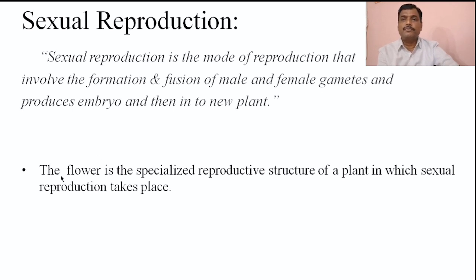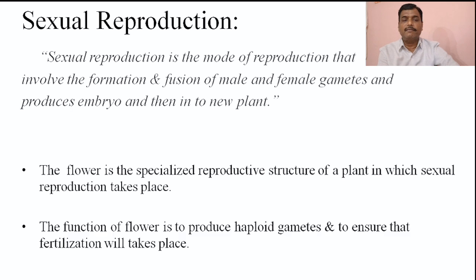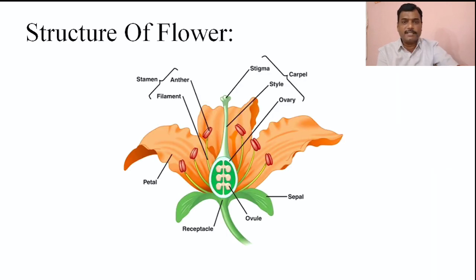In angiosperms, for the process of sexual reproduction, the flower is a specialized reproductive structure of the plant in which sexual reproduction takes place. The function of the flower is to produce haploid gametes and to ensure that fertilization will take place. The male and female gametes are produced with the help of the flower. These male and female haploid gametes fuse at the time of fertilization to develop into the new plant. Now we will discuss about the structure of the flower.